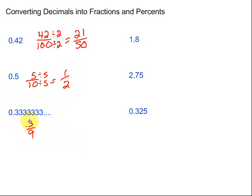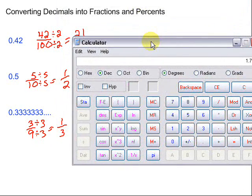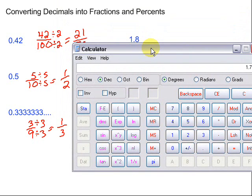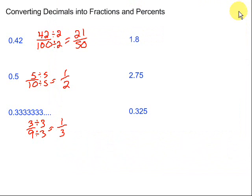Then we can simplify that as well by dividing by 3 on the top and the bottom. 3 divided by 3 is 1, 9 divided by 3 is 3. If you don't believe me, 1 third, remember we can change that back into a decimal by dividing it. So 1 divided by 3 gives us, sure enough, the 0.3 repeating. So we can make that conversion back to check our answer.